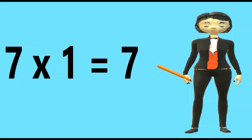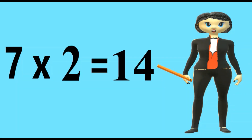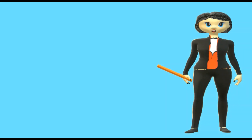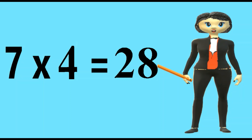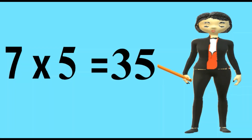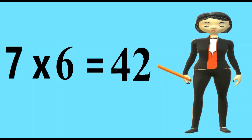7 1's are 7. 7 2's are 14. 7 3's are 21. 7 4's are 28. 7 5's are 35. 7 6's are 42.